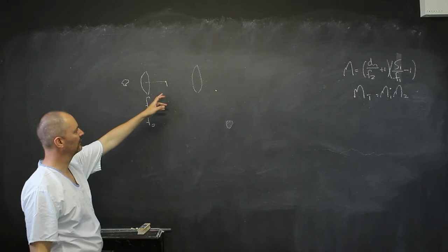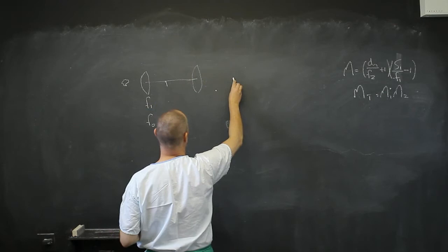And this real inverted image is then going to be the object of the second image. So this is now going to be your object image, and this is going to create for you again inverted, but now it's going to be upright, a second image.